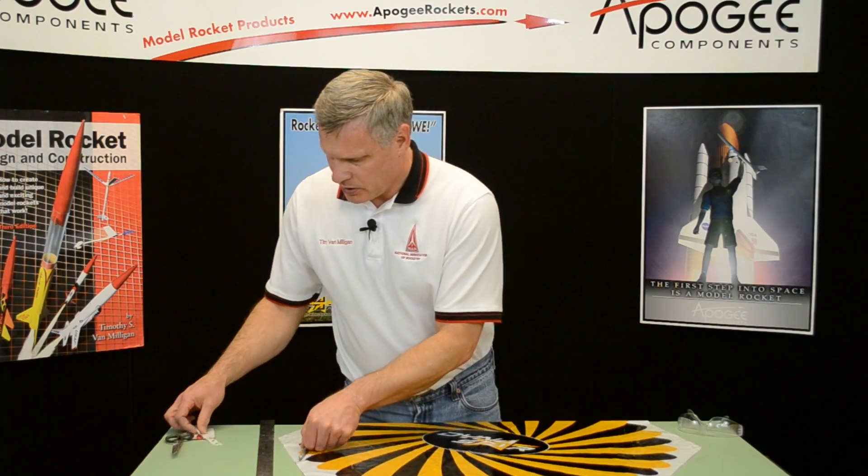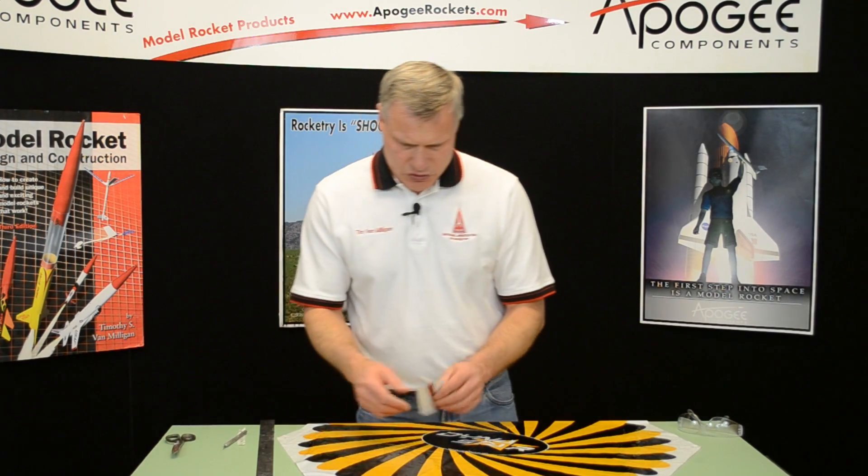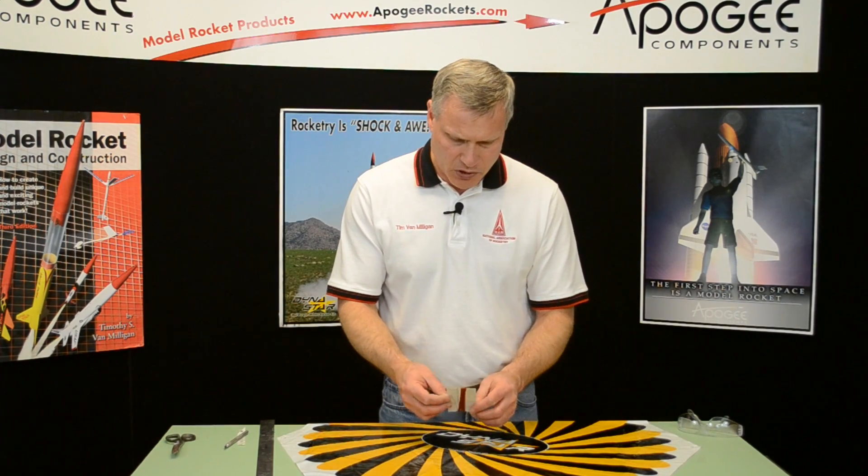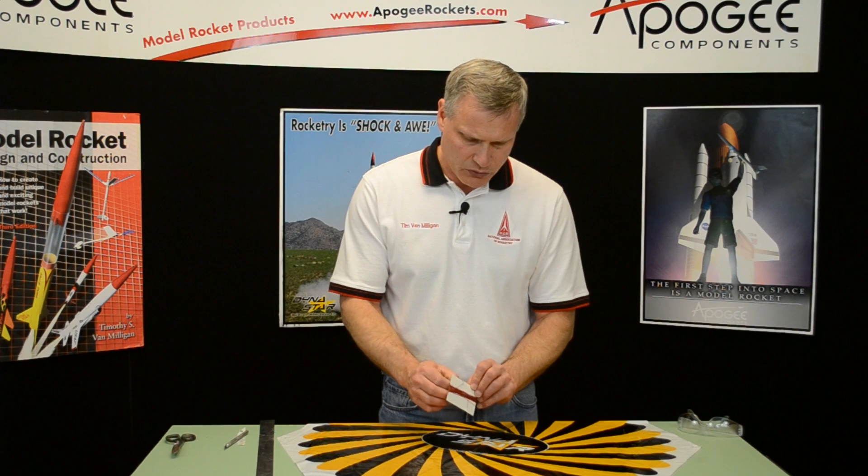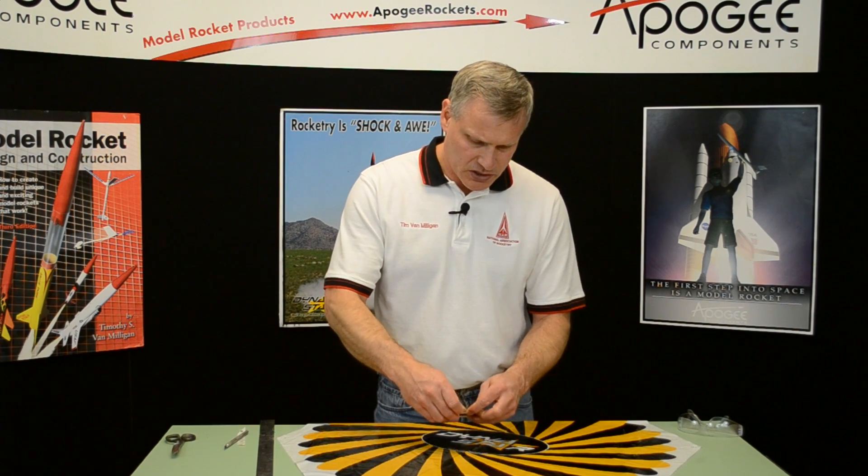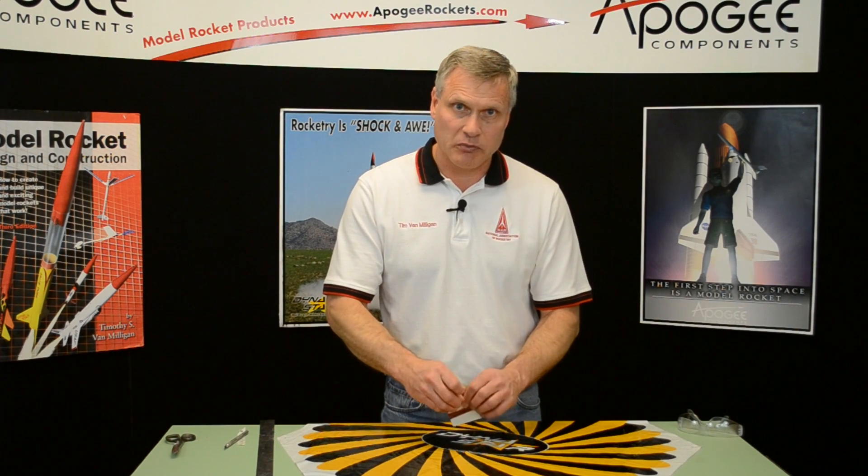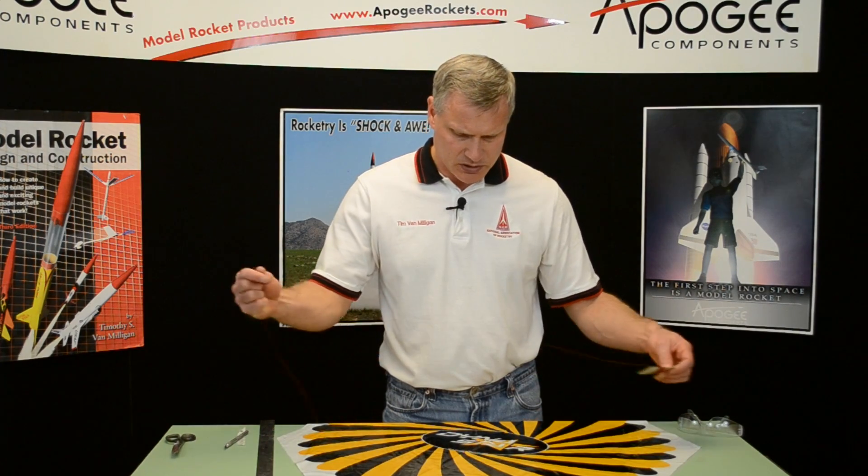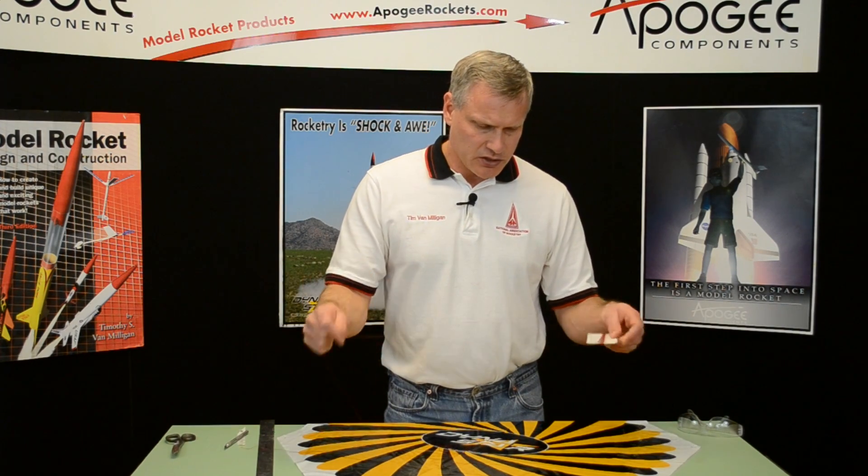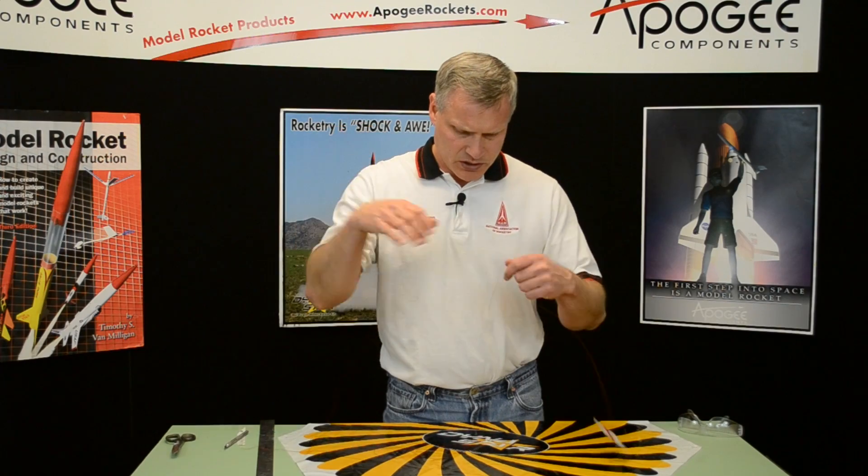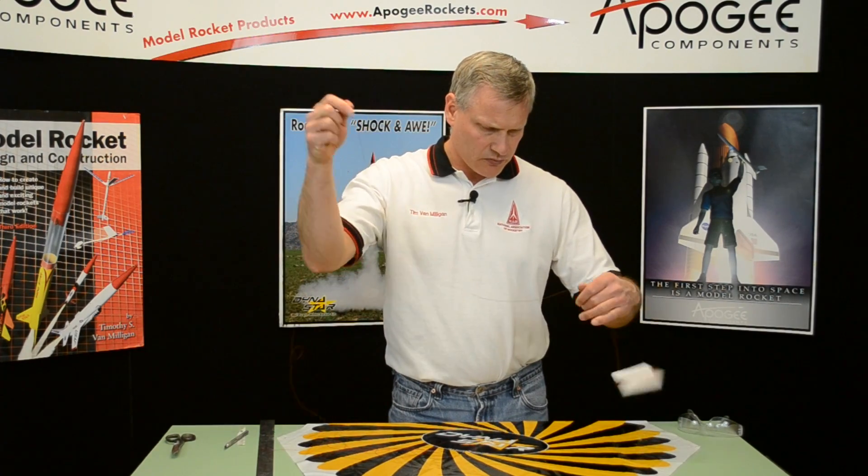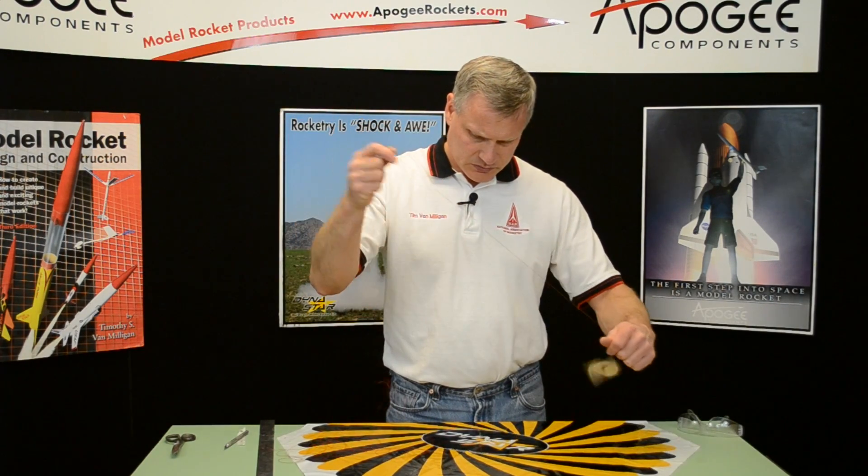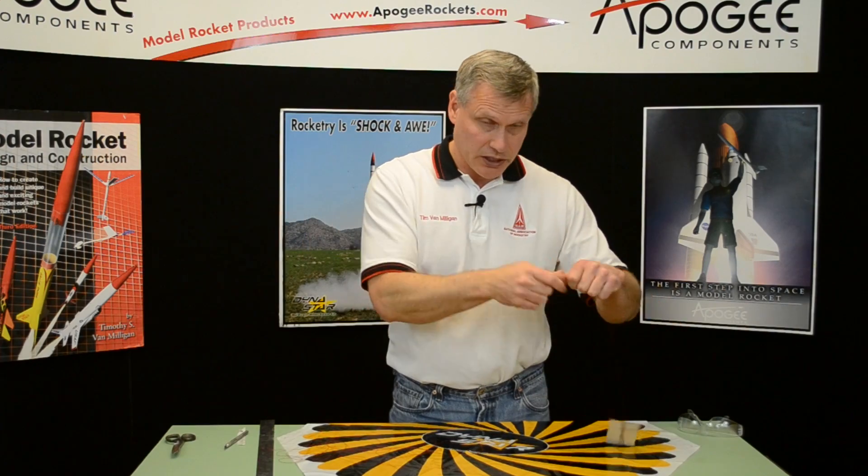Now for my shroud line string on this particular parachute we're using Kevlar thread. The reason is it's lighter weight, and in parachute duration you want to use as light a weight as possible. So we need to cut this into four equal parts without getting it tangled.